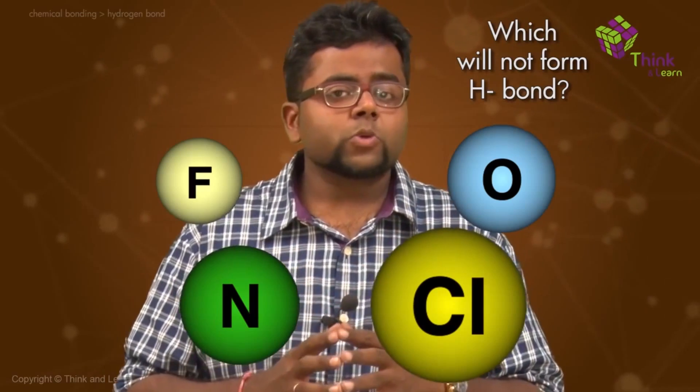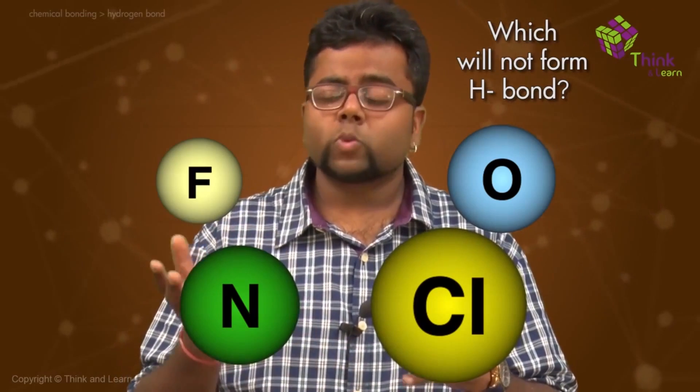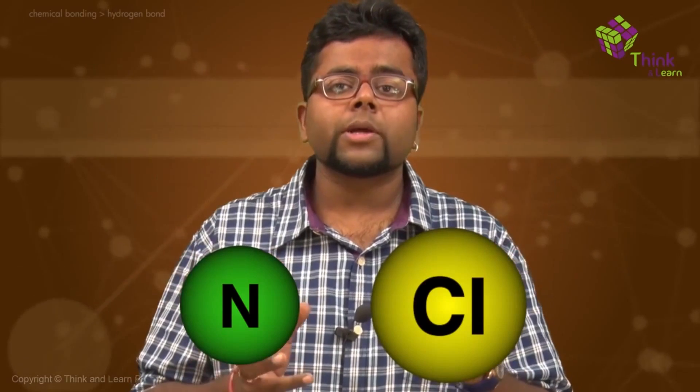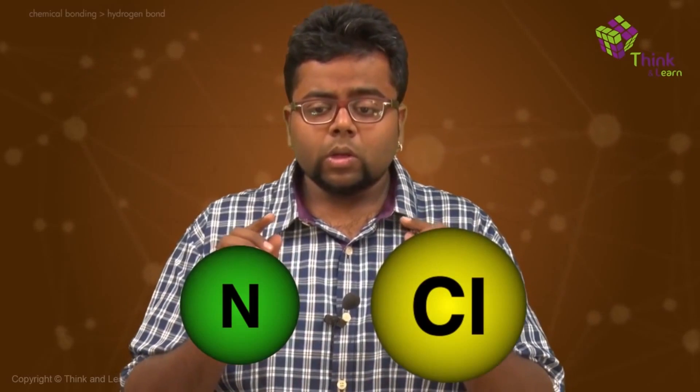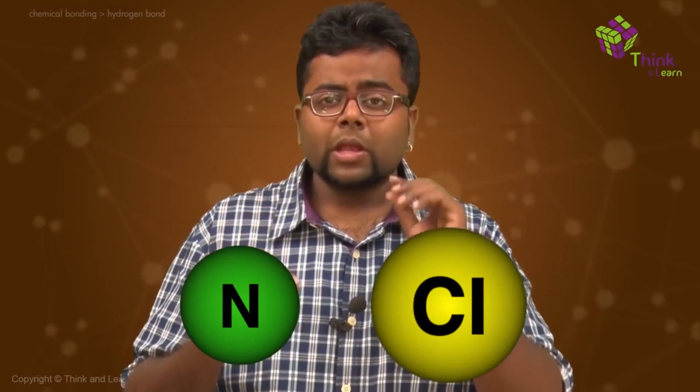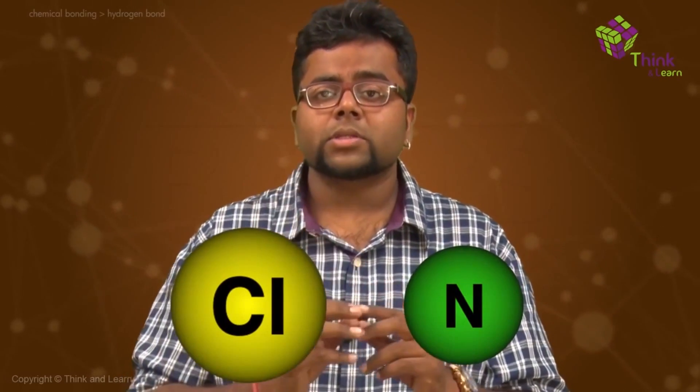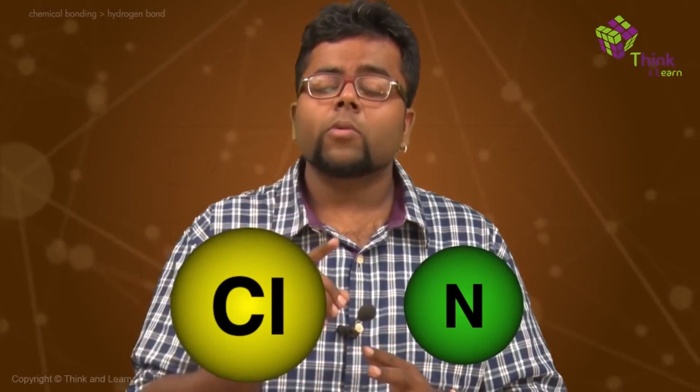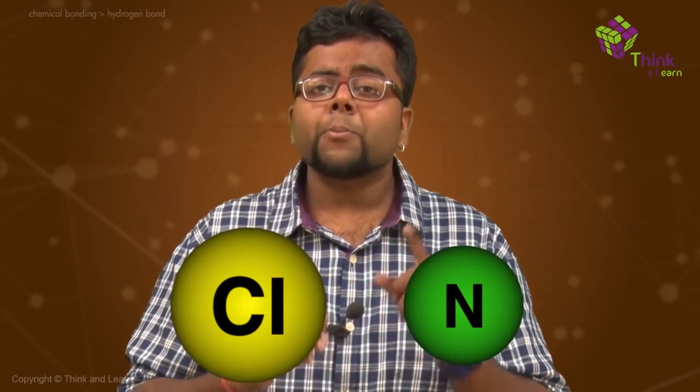Some of you must have chosen chlorine and others would have chosen nitrogen, because these are the two most likely possibilities for this answer. If you remember, the electronegativities of nitrogen and chlorine are almost the same. But still, there is a difference as to which one will make hydrogen bonding, and that difference arises from the second factor we had learned — the small size of the atom. How does the small size make a difference between nitrogen and chlorine?